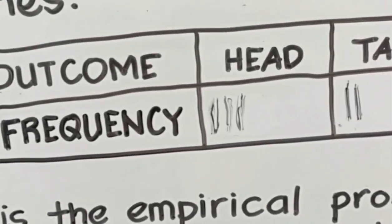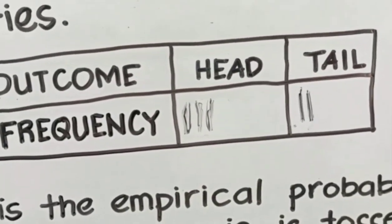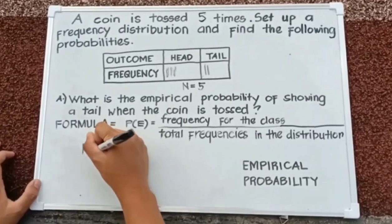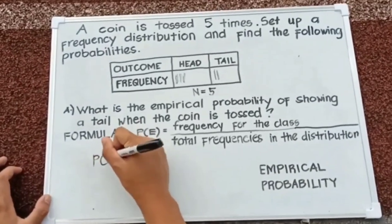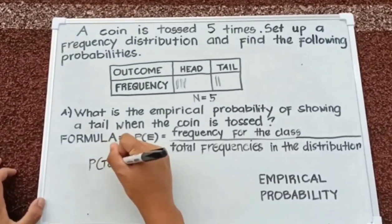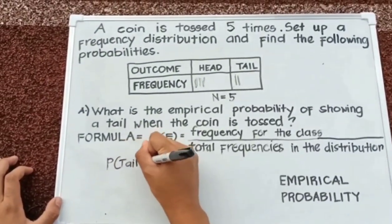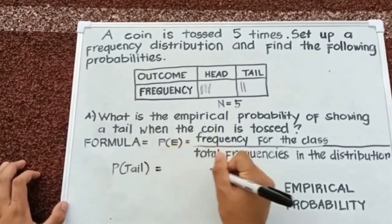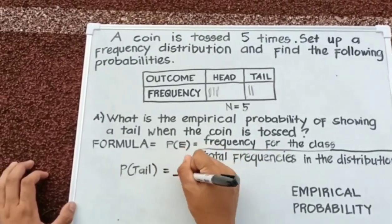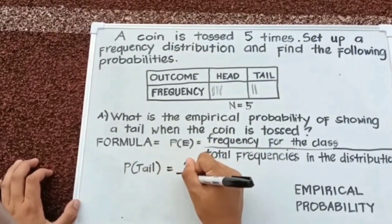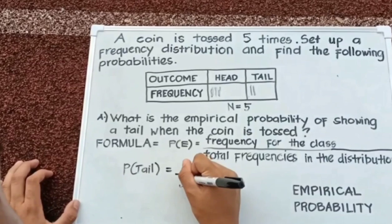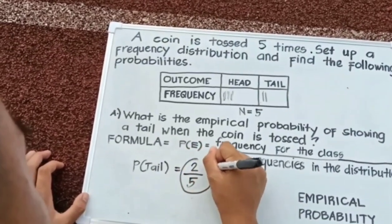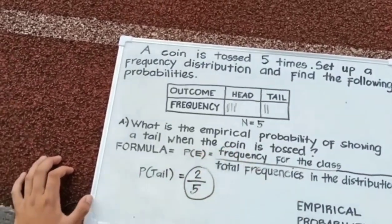After flipping a coin multiple times, the result was three heads and two tails. The probability of getting tails is the frequency for that outcome, which is 2, over the total frequencies in the distribution, which is 5. So the empirical probability of showing a tail when the coin is tossed is 2 over 5.